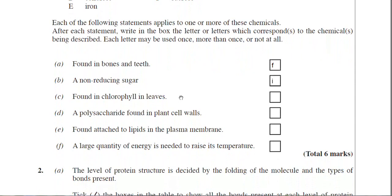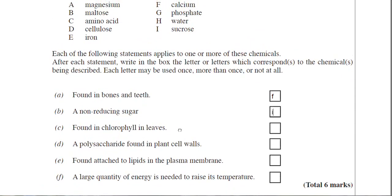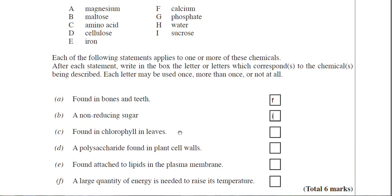Found in chlorophyll in leaves. So it's a component of chlorophyll now and then chlorophyll is found in the leaves. So that would actually be A for magnesium. Magnesium is found in chlorophyll.